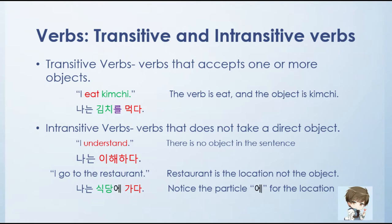Intransitive verbs are verbs that do not take a direct object. For example, 'I understand' — there is no object in that sentence. So in Korean, that will be: nanun, ihehada. There's no rule or ul to add since there's no object. For the second example, 'I go to the restaurant' — restaurant is a location, not an object. For locations, we use the particle e. So that will be: nanun, shikdange, kada.